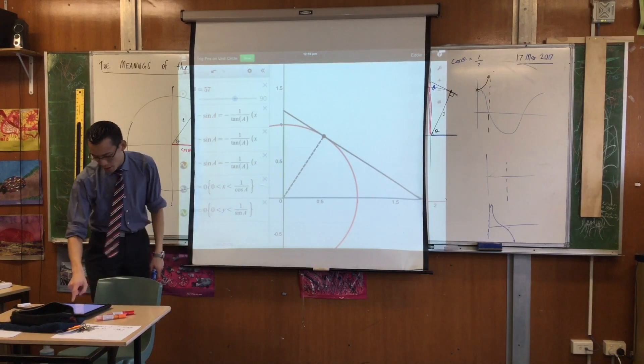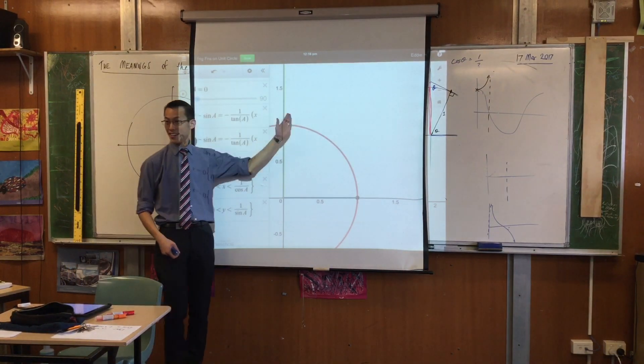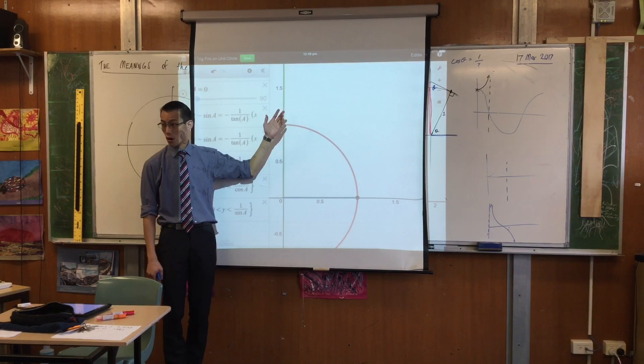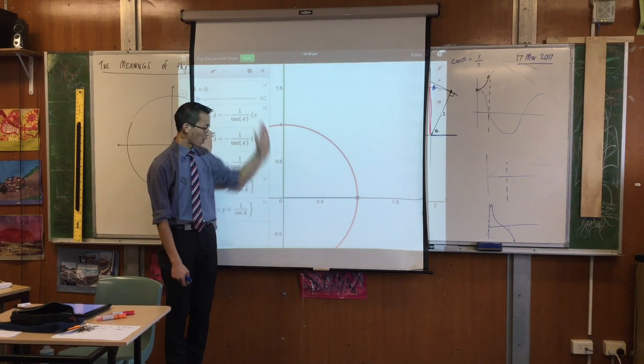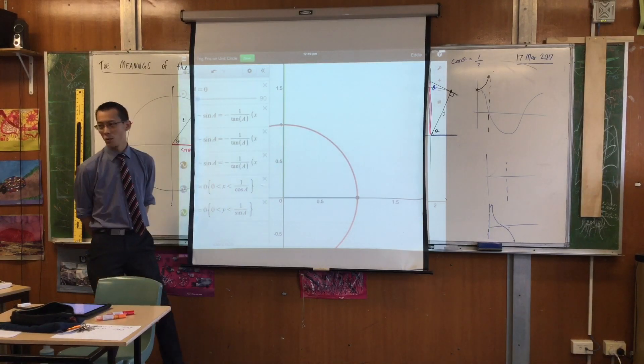In exactly the same way, if you want to think about this green guy. Let's go back to here. This green guy over here. This is cosec. Isn't it? Cosec doesn't even exist at the moment. Why not? What's cosec 0?